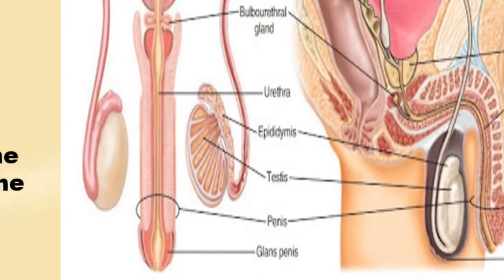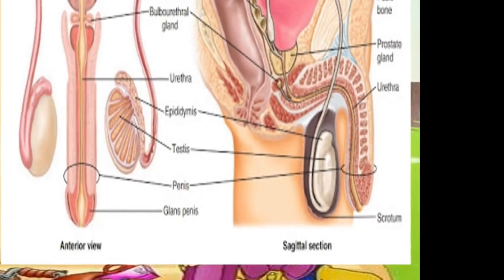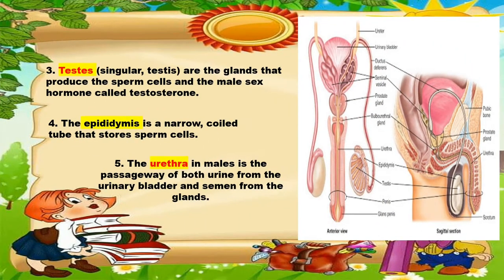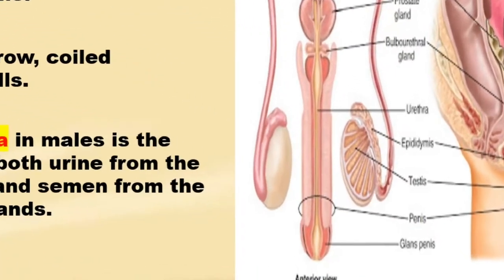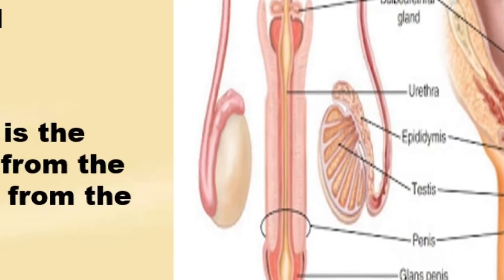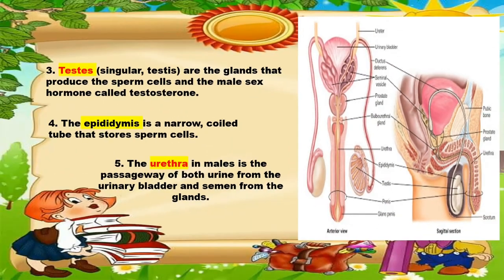The next one is the epididymis. It is a narrow coiled tube that stores sperm cells. Next is the urethra. In males, the urethra is the passageway of both urine from the urinary bladder and semen from the glands.